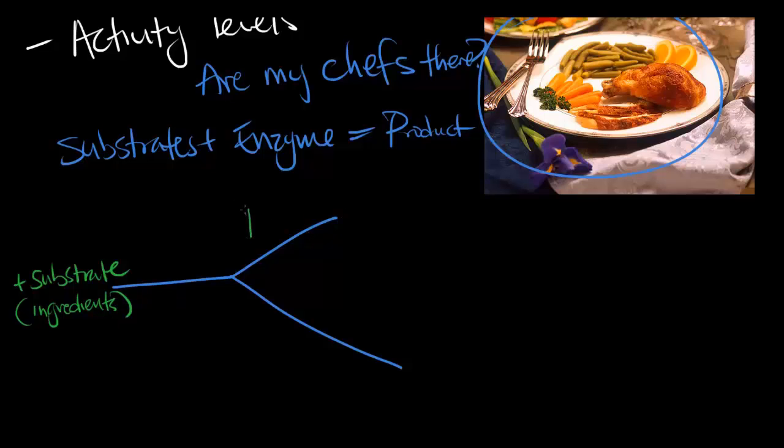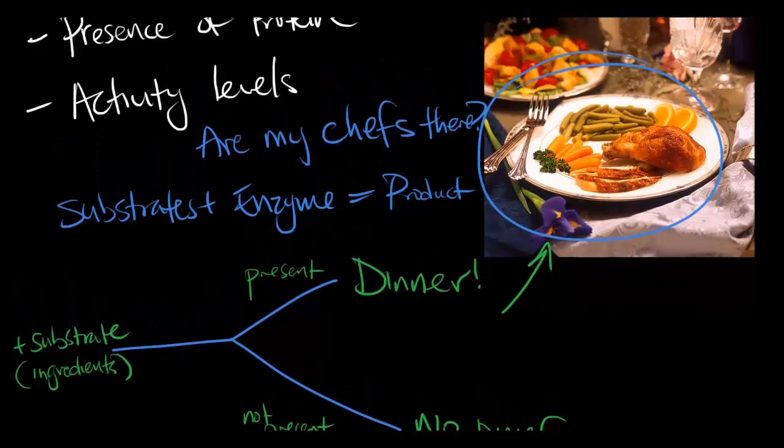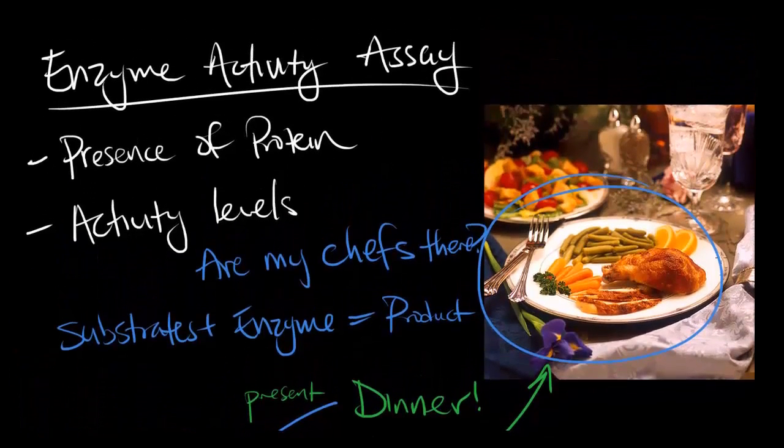Going back to the purpose of an assay, it can help us know if the enzyme is there or not. If you see that no dinner is being made, you know your chefs aren't there because if they were there, they would be making dinner. On the other hand, if you do see dinner being made, that's only possible because your chefs are there.